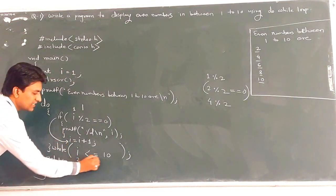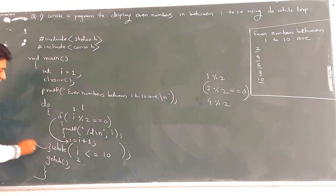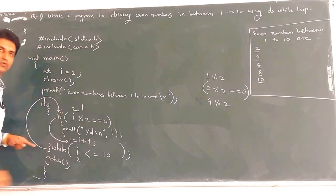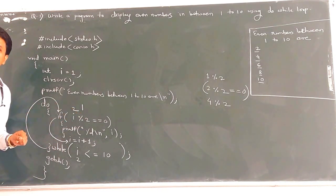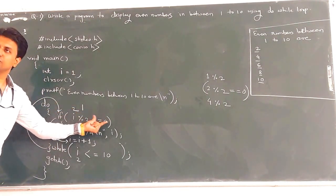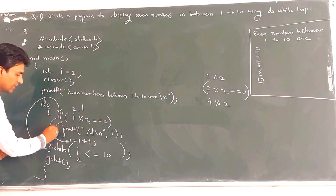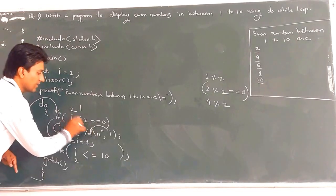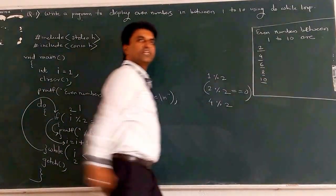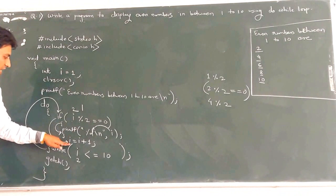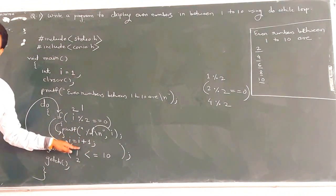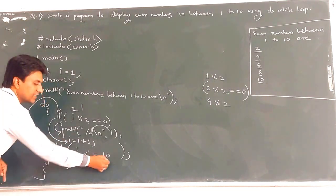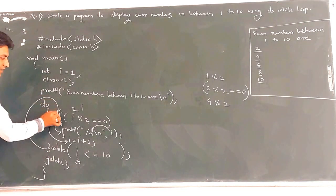Now i is 2. We check: 2 mod 2 gives 0, so 0 == 0 — condition is true. So we execute the printf statement and print 2 on the console. Next, i++ makes i equal to 3. The while condition: 3 <= 10 is true, so the loop continues. Now 3 mod 2 gives 1, so the condition is false and the if body does not execute.